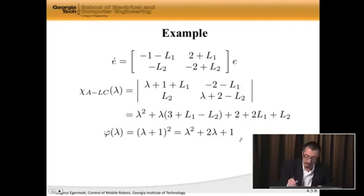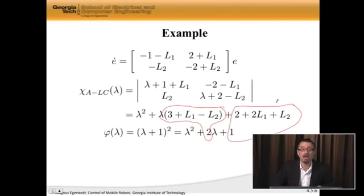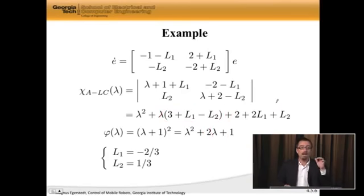Well, what do we do now? Well, we line up coefficients, of course. These coefficients have to be the same, and these coefficients have to be the same. And if you actually solve this, I'm not going to go through the algebra. I encourage you to do it on your own. You get that L1 is negative 2 over 3, and L2 is a third.